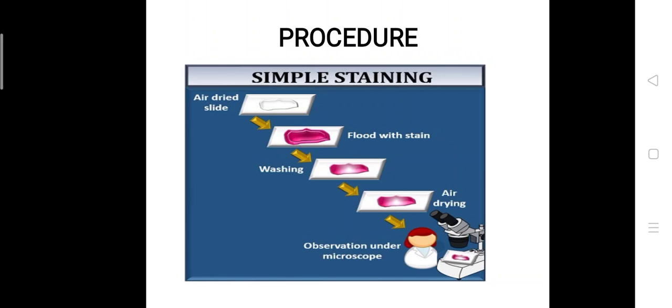After staining, gently wash the smear with tap water to remove excess stain. Hold the slide parallel to the stream of water to reduce the loss of organisms from the preparation. Then, using bibulous paper or blotting paper — or tissue — blot the slide dry; do not wipe it. Then examine the stain under oil immersion.